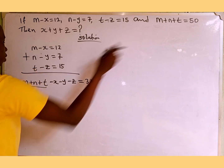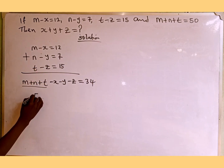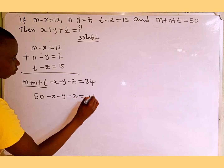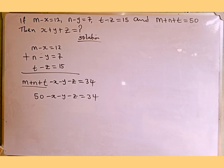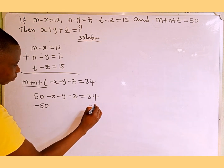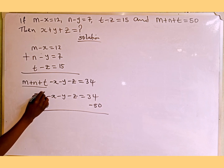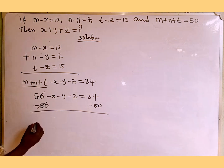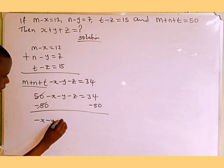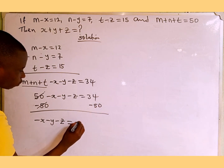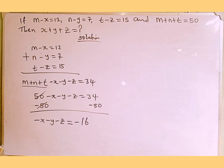Since m plus n plus t is the same as 50, we replace it with 50. So we have 50 minus x minus y minus z equals 34. The next thing we do is subtract 50 from both sides. The 50s cancel on the left side, leaving minus x minus y minus z equals 34 minus 50, which gives us minus 16.